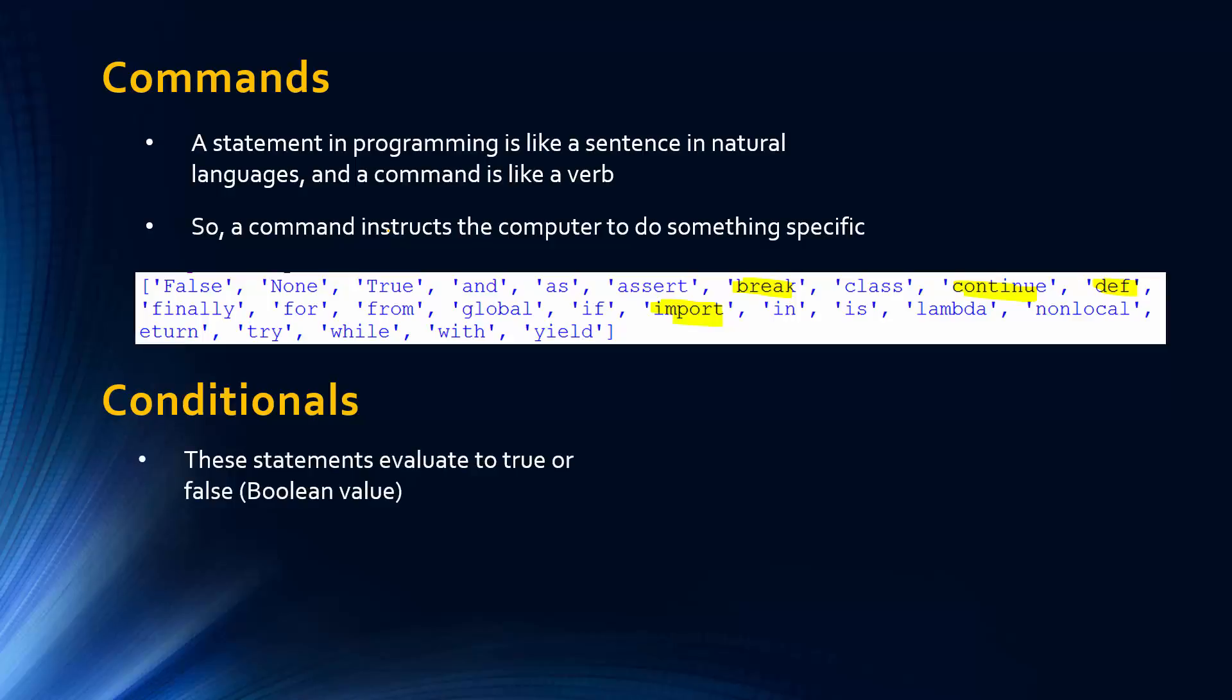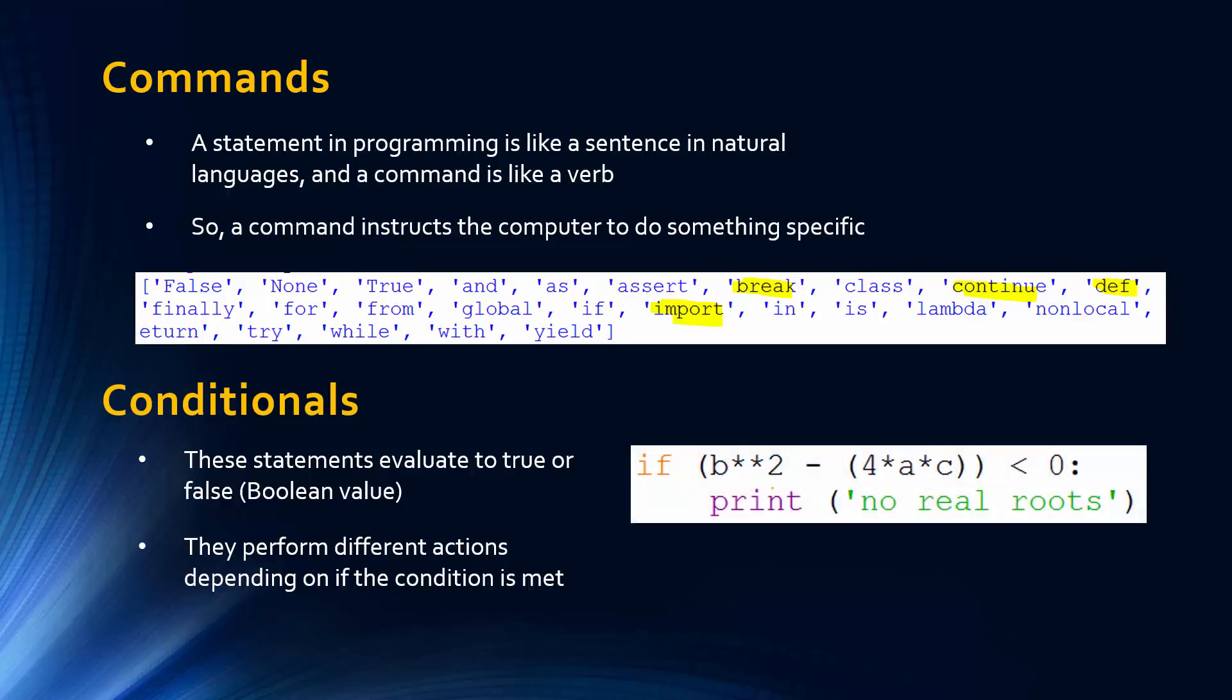Conditionals are statements that evaluate to true or false. So they evaluate to a Boolean value. So that's 1 or 0. And they perform different actions depending on if the condition is met. So this is the condition. b squared minus 4ac is less than 0. This is the discriminant in quadratics, if you're wondering. And if this is true, so if this evaluates to true, no real roots is printed.